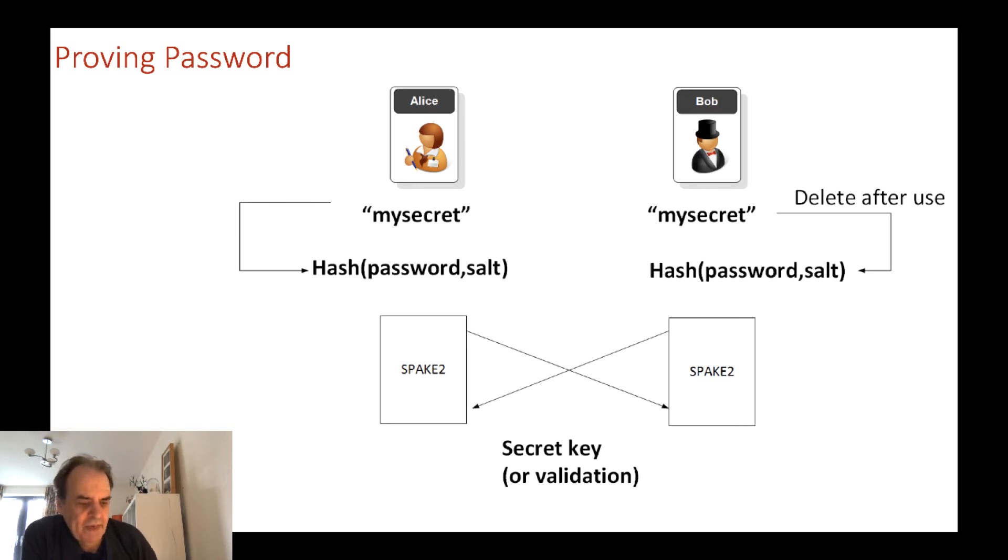SPAKE enhances this where we can pass secrets on either side and end up with the same password. The way that SPAKE does this is to create a hash of the password on either side and then delete after use. After this we have a secret key which can then validate Alice to Bob and Bob to Alice.